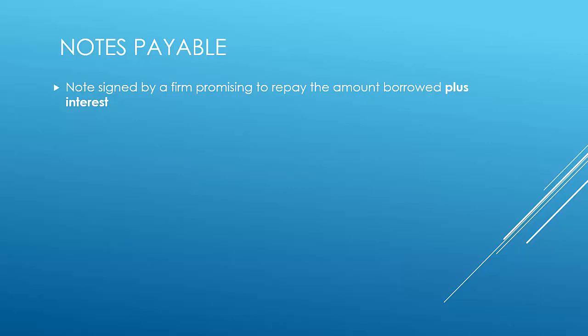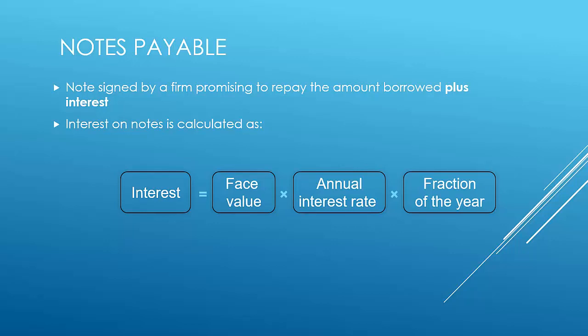A note payable is usually taken out by a company from the bank. The bank makes them sign a note — think of it like a piece of paper the company signs promising to pay back the amount borrowed plus interest. For simple interest on a note payable, you take the face amount times the annual interest rate times the fraction of the year that the note was outstanding.